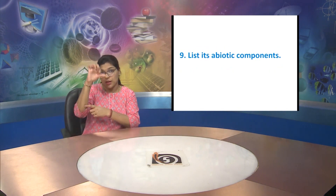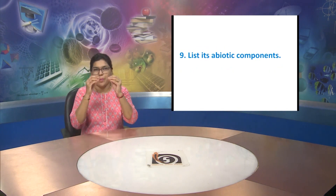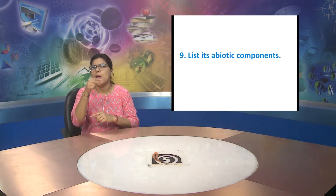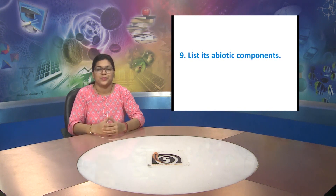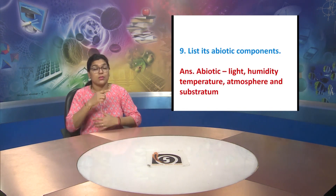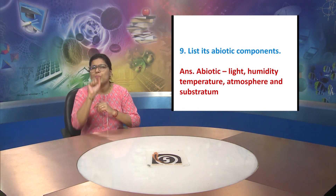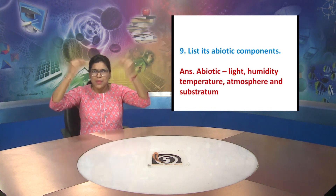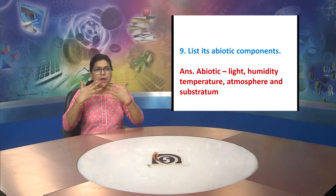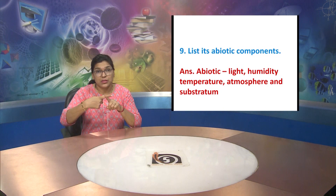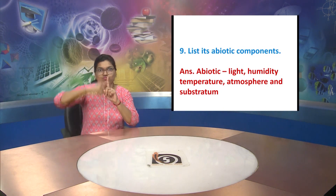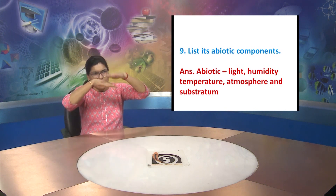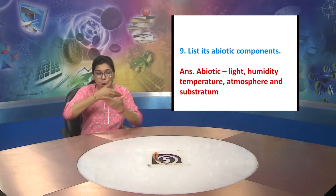Question nine: list its abiotic components. Answer: light, humidity, temperature, atmosphere, and substratum. These are the abiotic components of the Earth.